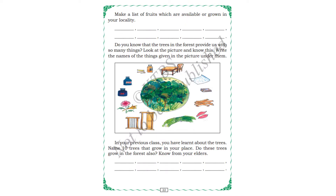Make a list of fruits which are available or grown in your locality. Whatever is grown, you can tell me. Here they have given space — you can tell me in the comments.